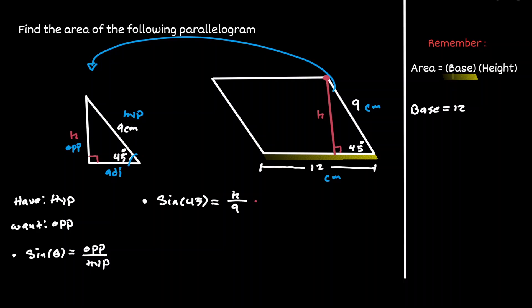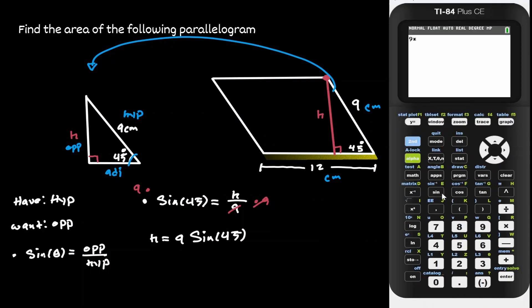If we multiply by 9 on both sides, we get an expression for the height: 9 times the sine of 45. We can use our graphing calculator for this, which gives us 6.36.